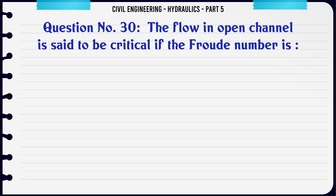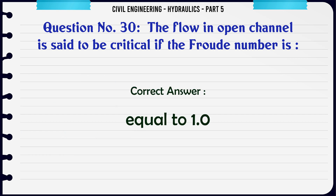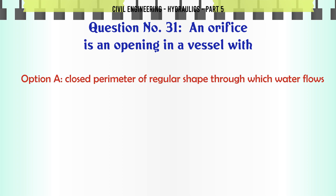The flow in an open channel is said to be critical if the Froude number is: A. less than 1.0, B. equal to 1.0, C. greater than 1.0, D. none of these. The correct answer is equal to 1.0.